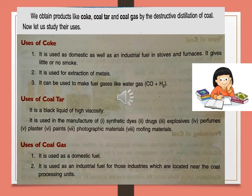Uses of coal tar: it is a black liquid of high viscosity. It is used in the manufacture of synthetic dyes, drugs, explosives, perfumes, plaster, paints, photographic materials, and roofing materials. Coal gas is used as a domestic fuel and as an industrial fuel, especially for industries located near coal processing units. These are the different uses of the products obtained by destructive distillation of coal — that is, coke, coal tar, and coal gas.